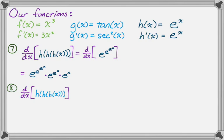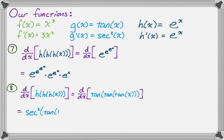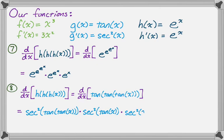Now the derivative of g(g(g(x))), which is the derivative of tan(tan(tan(x))). The derivative of tangent of something is sec² of that thing. So we get sec²(tan(tan(x))) times the derivative of tan(tan(x)), which gives sec²(tan(x)), and then times the derivative of tan(x), which is sec²(x). Final answer: sec²(tan(tan(x)))·sec²(tan(x))·sec²(x).